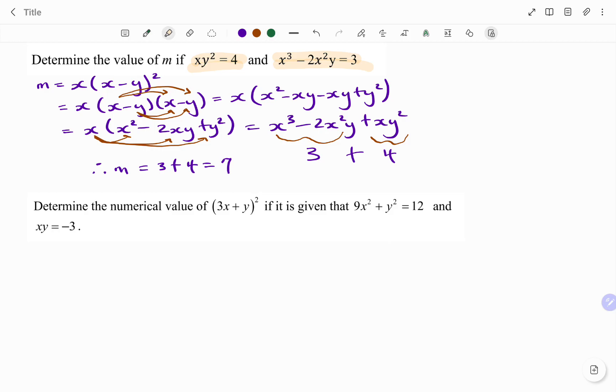So I'll start by expanding the expression 3x plus y all squared. That's the same as 3x plus y multiplying 3x plus y. And if I expand that, I'm going to have all the terms in the first bracket multiplying all the terms in the second bracket, as shown by my arrows.